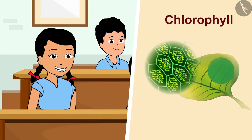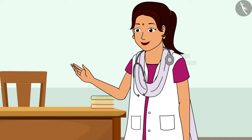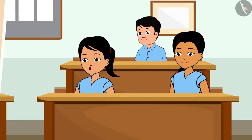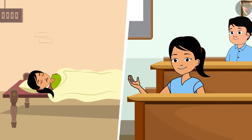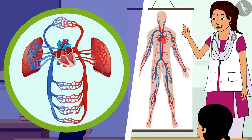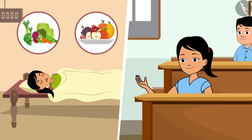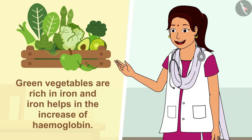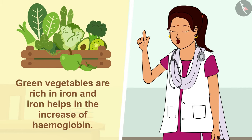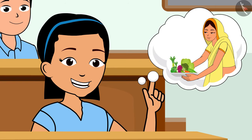Similarly, because of the presence of chlorophyll in leaves, they are green in color. Very good — that is a wonderful simile, Sarita! Didi, once I had a lot of weakness and the doctor said that the level of hemoglobin had reduced in my blood. Yes, children — hemoglobin not only gives color to the blood but also binds with oxygen and transports it to all parts of the body and ultimately to the cells. The doctor had prescribed me to eat green vegetables and fruits. Yes, because green vegetables are rich in iron, and iron helps increase hemoglobin. Oh, so this is the reason why my mother asks me to eat spinach — now I understand!